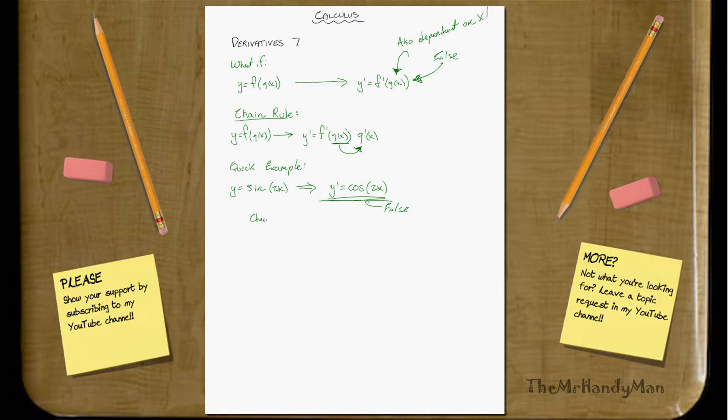Using the chain rule, we would get y prime is equal to, you had the first part right, cosine of 2x, multiplied by the derivative of 2x, which is just 2. So that'll equal 2 cosine 2x. Not too terrible. Pretty simple, actually, right? And that's all you do.